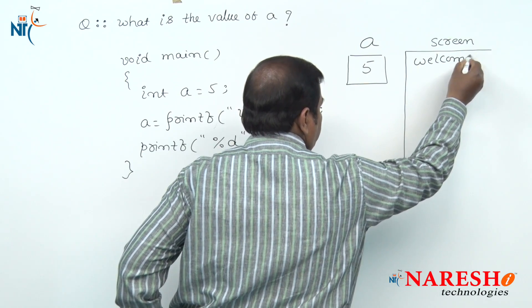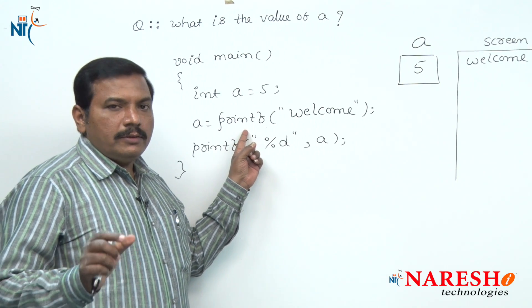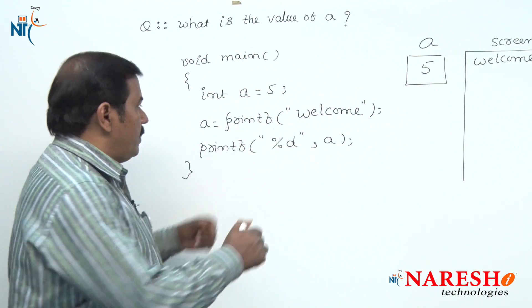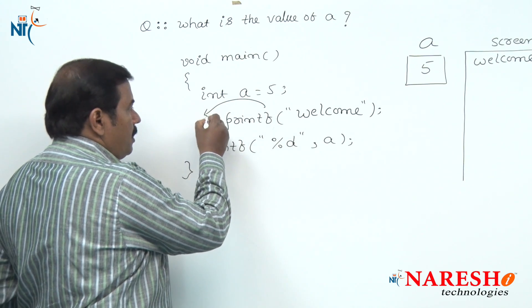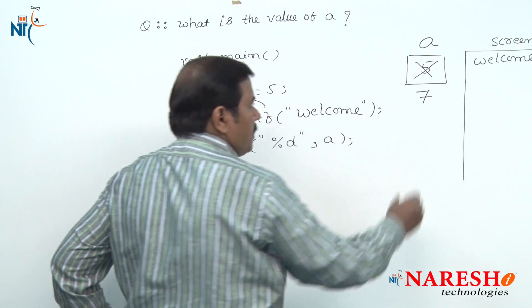The string welcome is printed as it is onto the screen, and as well as the printf function returns the value 7 into this variable A. Hence the value held by variable A is 7.